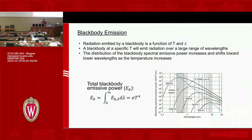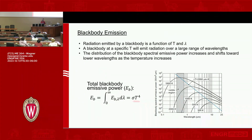Total black body emissive power is just the integral of the spectral black body emissive power, and for a black body it's equal to sigma T to the fourth. This is where the whole radiation rate equation comes from.